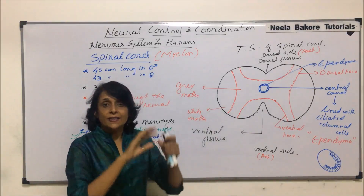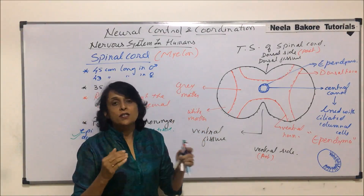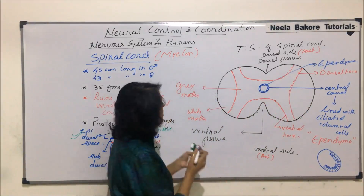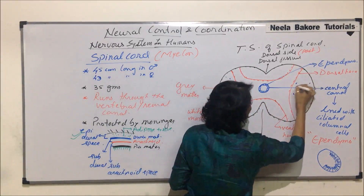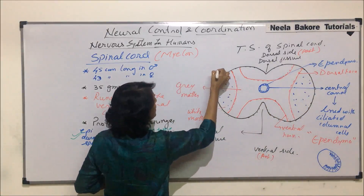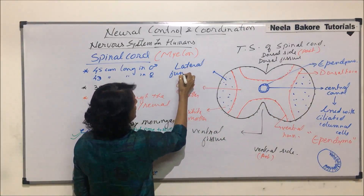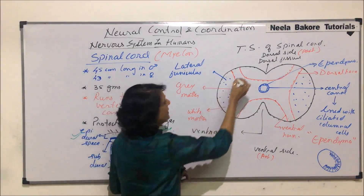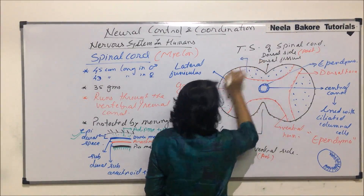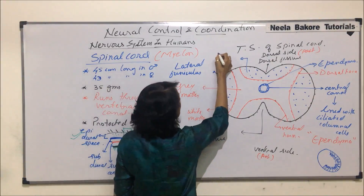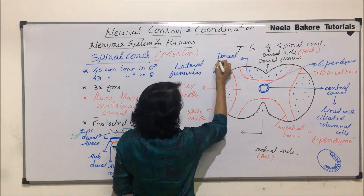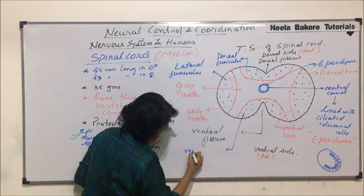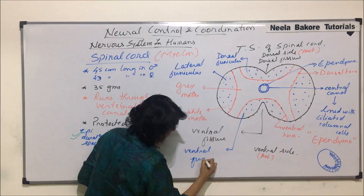Because of this arrangement, the outer white matter has been divided into distinct zones. The white matter on the lateral side is known as the lateral funiculus. The white matter on the dorsal side is known as the posterior or dorsal funiculus, and the one on the ventral side is known as the ventral funiculus.